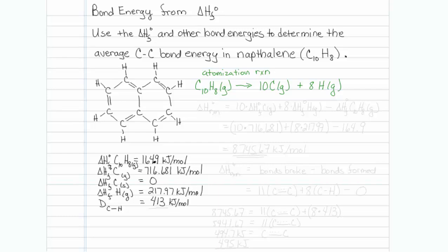Next is to find the delta H of this reaction in the standard state, and we're going to take the heats of formation of our products minus the heats of formation of our reactants. So we will take ten times the heat of formation of carbon gas plus eight times the heat of formation of hydrogen gas minus one times the heat of formation of naphthalene in the gas phase.